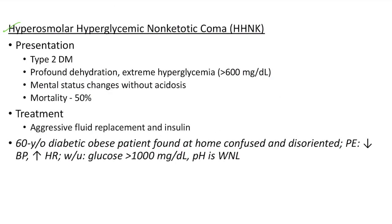Hyperosmolar hyperglycemic non-ketotic coma (HHNK) is seen in uncontrolled type 2 diabetes mellitus. There will be profound dehydration and extreme hyperglycemia — blood glucose usually more than 600 mg/dL. There will be mental status changes without acidosis. The mortality in HHNK is around 50%. It is treated with aggressive fluid replacement and insulin. Clinical case: A 60-year-old diabetic obese patient found at home confused and disoriented. Physical examination shows low blood pressure and elevated heart rate. Workup shows blood glucose more than 1000 mg/dL and pH within normal limits — a classic case of HHNK.